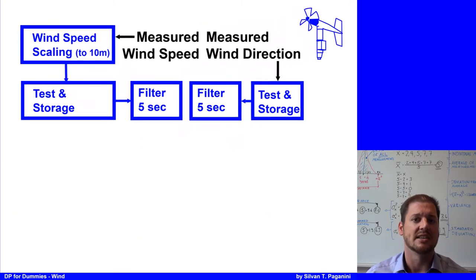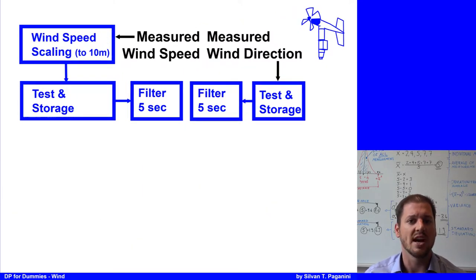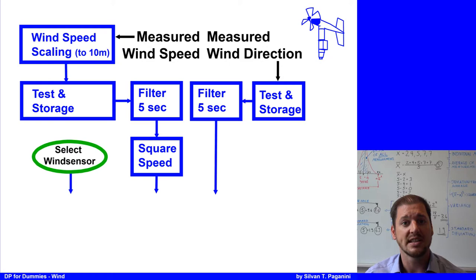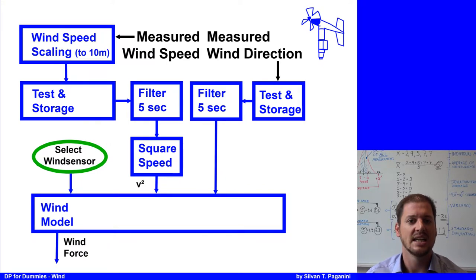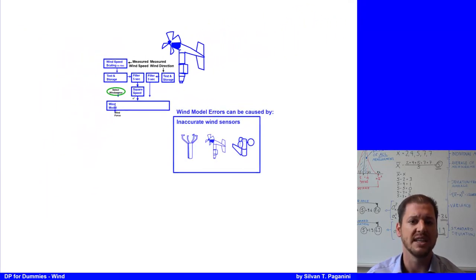The wind is finally filtered and the wind speed is then squared, meaning wind speed multiplied by wind speed, and forwarded to the wind model together with the wind direction. The wind model uses a set of wind coefficients for various angles of attack to calculate the wind force as a function of wind speed and direction.